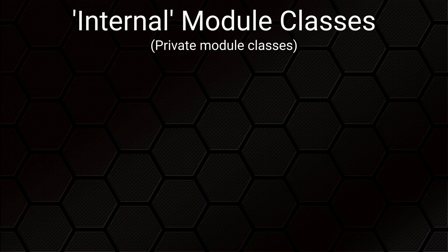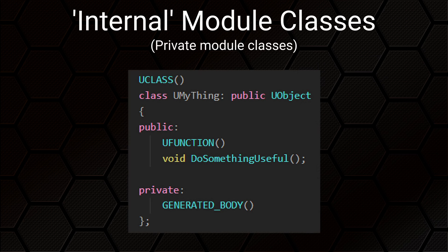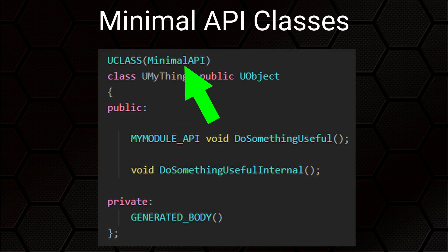Internal module classes are classes that other code in the same module can use, but other modules cannot — Unreal calls these private classes. Nothing outside this module can use them, cast to them, or call their functions. It's worth noting we're talking about C++ here; if you make your classes Blueprintable then users may still be able to create Blueprints derived from them. If you add the specifier MinimalAPI to the UCLASS macro, Unreal will expose basic type information about this class to other modules, meaning you can write C++ code in other modules that use this class — subclass it, use it in casting operations, and call inline functions.